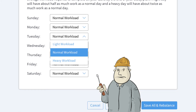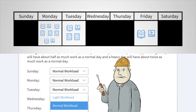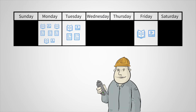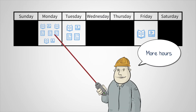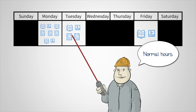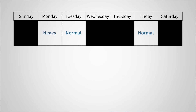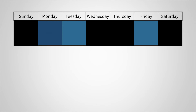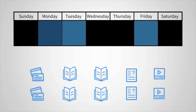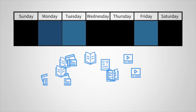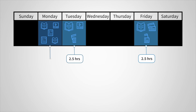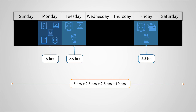The amount of work you have to do doesn't change. Cramfighter will just adjust the tasks so you have more hours of work on a heavy day than a normal day. In our example, if you marked one day to have a heavy workload, Cramfighter would distribute tasks so you have about 2 and 1/2 hours of work on each normal day, but 5 hours of work on the heavy day. You're still covering the same 10 hours of work, but now you have twice as much on that heavy day as your normal day.